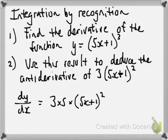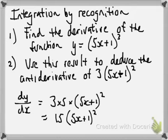We've done that. So, 3 goes out the front, multiply by the derivative of the bracket, reduce the bracket by 1, tidy it up, and we get 15 outside of 5x plus 1 squared. Very good. We've answered part 1 of the question.